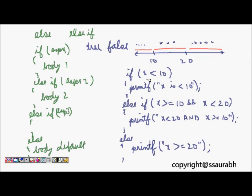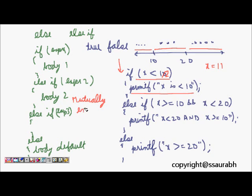Otherwise, if say we wrote 12 instead of 10, and x is equal to 11, then because x is less than 12, that first condition will be checked first and it will print x is less than 10 — which is wrong. So our expressions should be mutually exclusive. The program goes top to bottom and whichever condition matches first, it will go into that block. This was about if, else if, and else blocks.